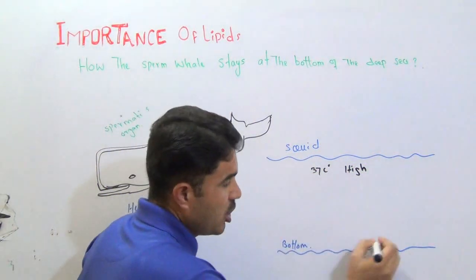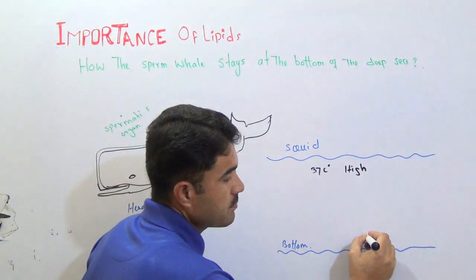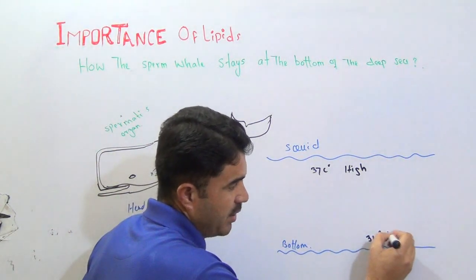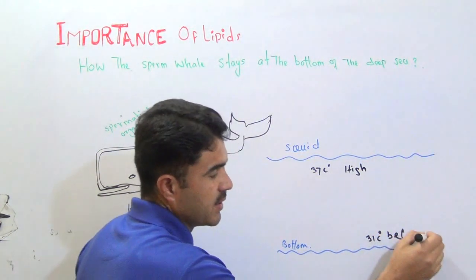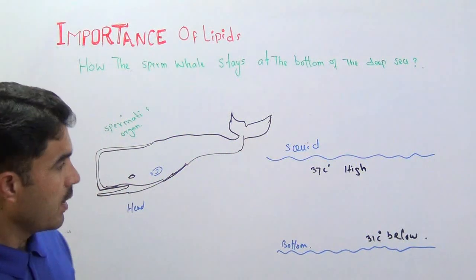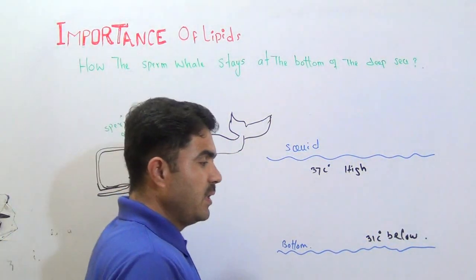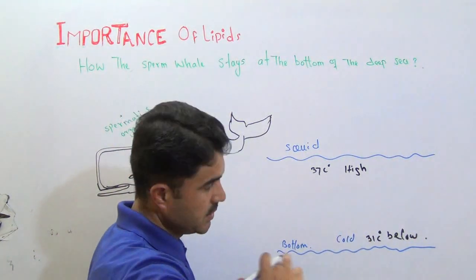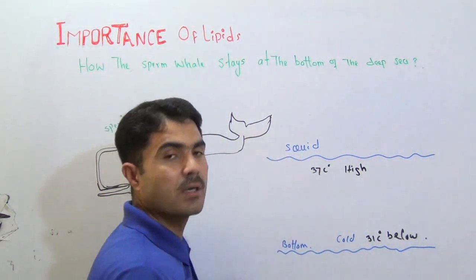And this temperature is actually of the bodies of the whale. At the top, the temperature is below 31 degrees centigrade. At the bottom, there is very cold condition, as compared to the top.